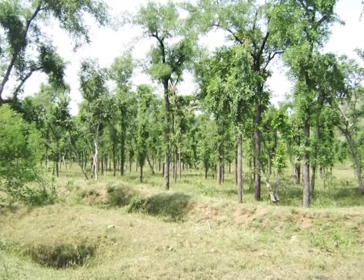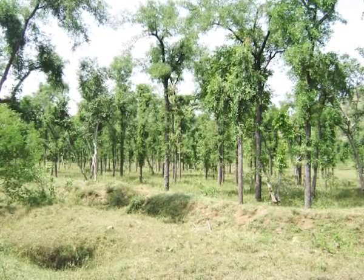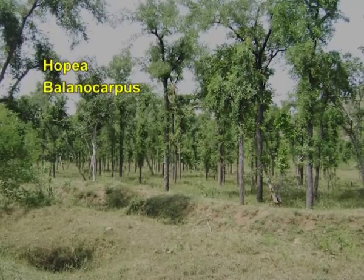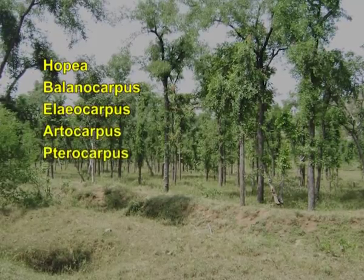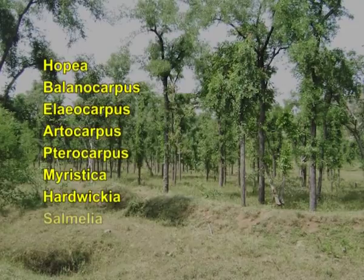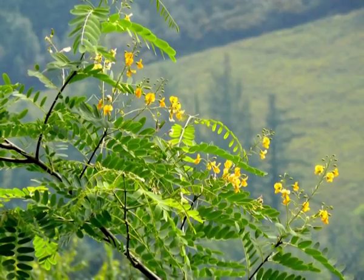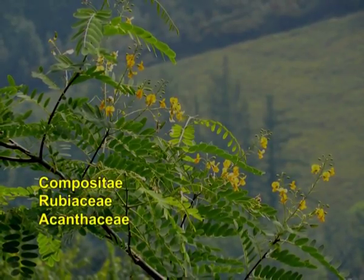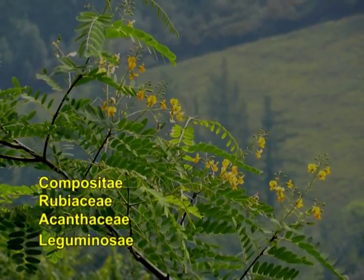Important plant constituents: vegetation in the Eastern Himalayas includes species of Conifers, Hopea, Belenocarpus, Elaeocarpus, Pterocarpus, Myristica, Hardwickia, Salmalia, and Dioscorea. The members of the family Compositae, Rubiaceae, Acanthaceae, and Leguminosae form the undergrowth.